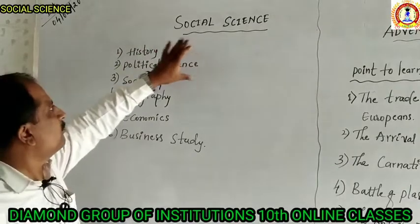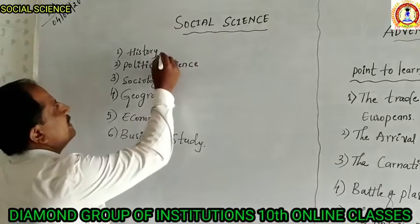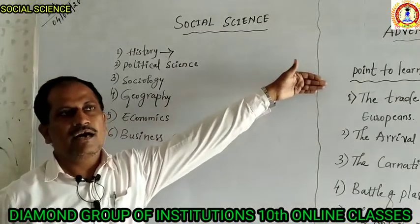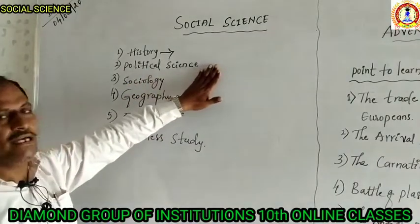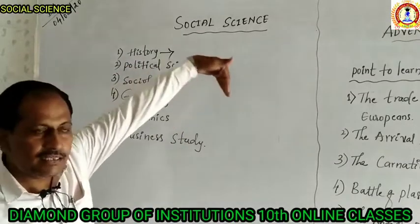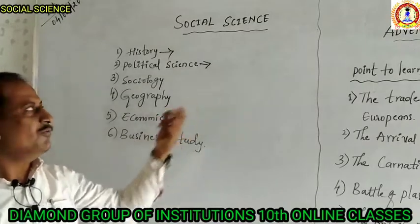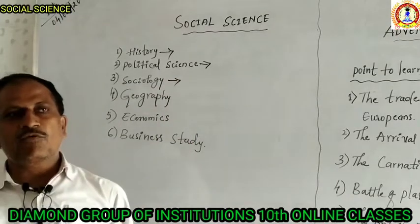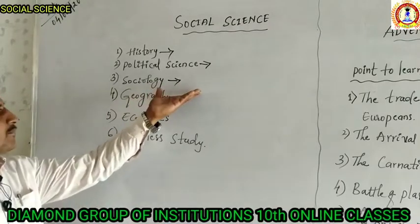In every part we study different points. In history, we study past events related to any country, historical places, or persons. In political science, we study politics and political things related to particular countries or particular points of view. In sociology, we study points related to society — what kind of society develops and how.